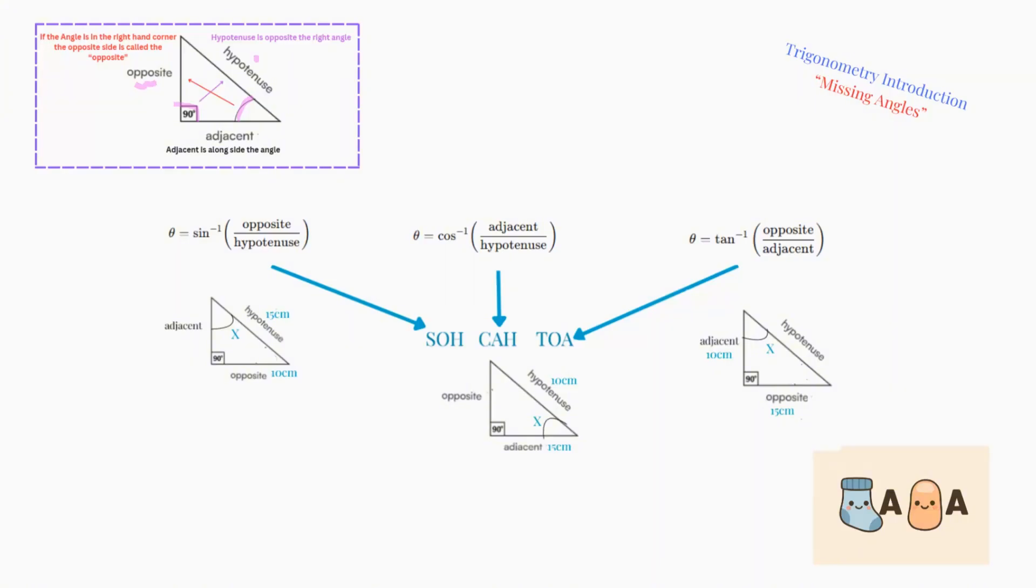And then the adjacent here is always in line with the angle. And one thing you need to remember is wherever the angle goes, the opposite follows. So if you have an angle here, the opposite becomes here. And the adjacent will move this side. Because adjacent has to be level in line with the angle.